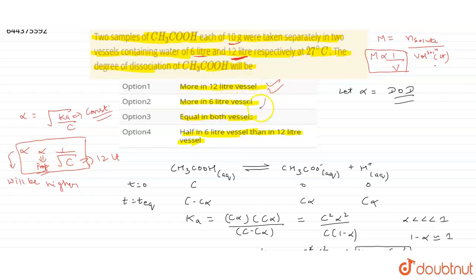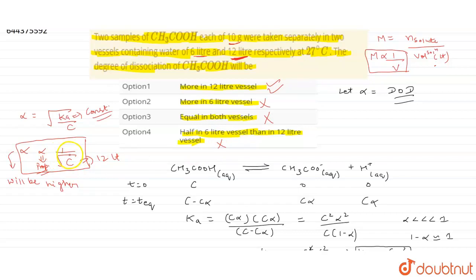More in 6 liter vessel is wrong. Equal in both vessels is also wrong. Half in 6 liter vessel than in 12 liter vessel is also wrong, because alpha is inversely proportional to root C, not to C directly. So alpha will not simply be half.